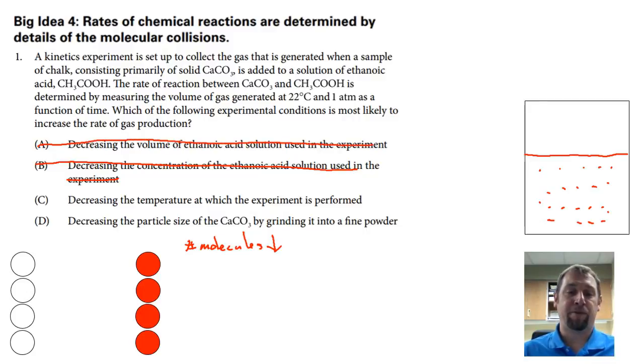Decreasing the temperature at which the experiment is performed. Well I told you that you have to increase the speed of the molecules themselves in order for the reaction to go faster because they're going to collide at a greater frequency. Decreasing the temperature actually slows those molecules down. So that will actually slow the experiment down.